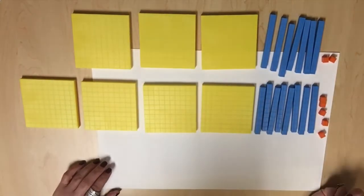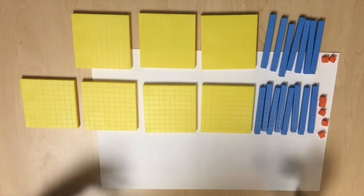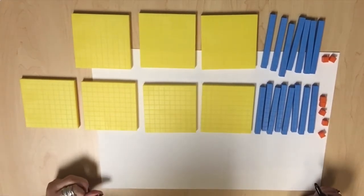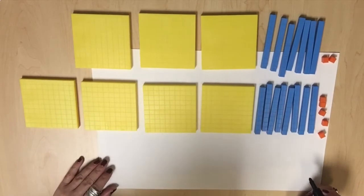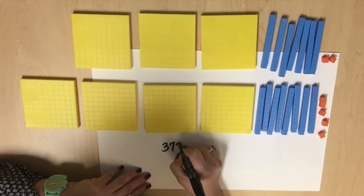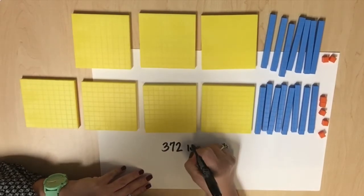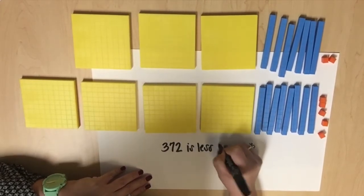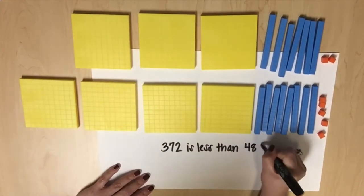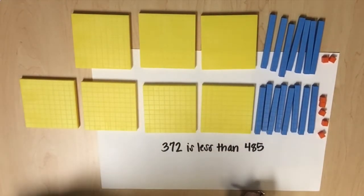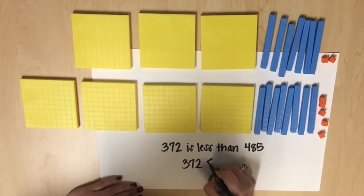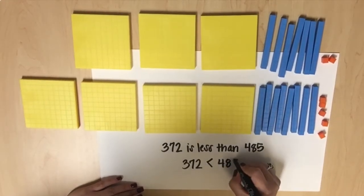So I know that Josiah has the greatest number of pennies. I want to model how to create a true comparison between the two quantities using comparative language and with symbols. We know Alan's 372 pennies is less than Josiah's 485 pennies. Using symbols, 372 is less than 485.